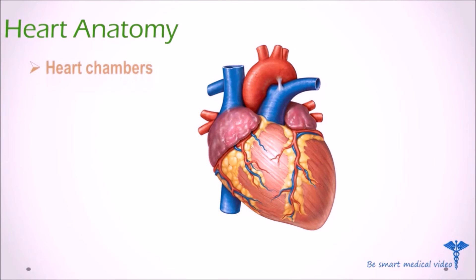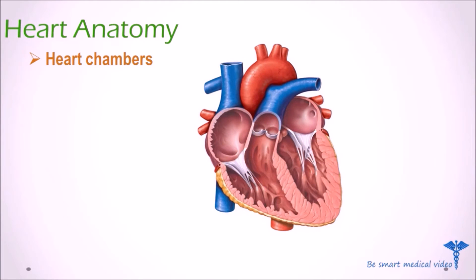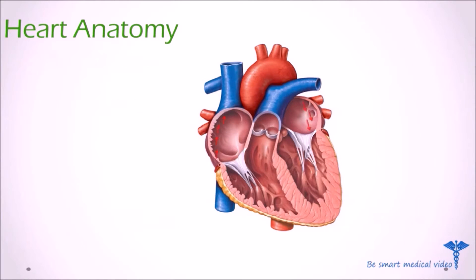Now we will discuss about the chambers of the heart. The human heart is four-chambered. The four chambers are two upper atria — the right atrium and left atrium — and two lower chambers, which are ventricles — the right ventricle and left ventricle. The atria are smaller than the ventricles and have thinner, less muscular walls. The chambers on the right side of the heart are smaller and have less myocardium in their heart wall compared to the left side.